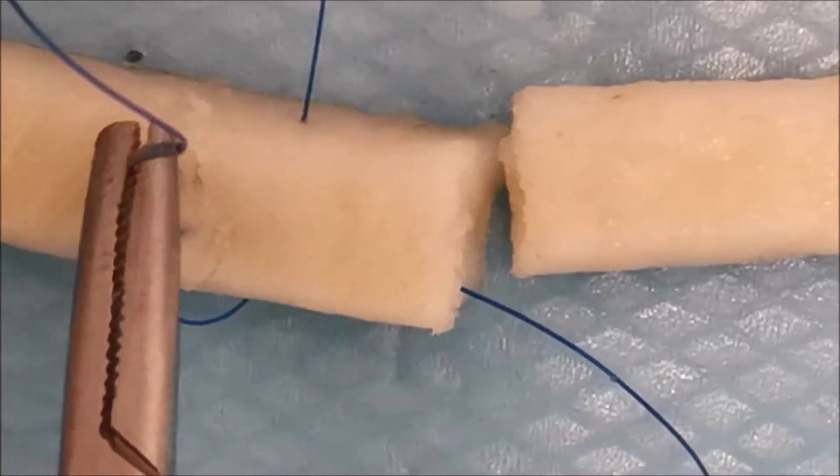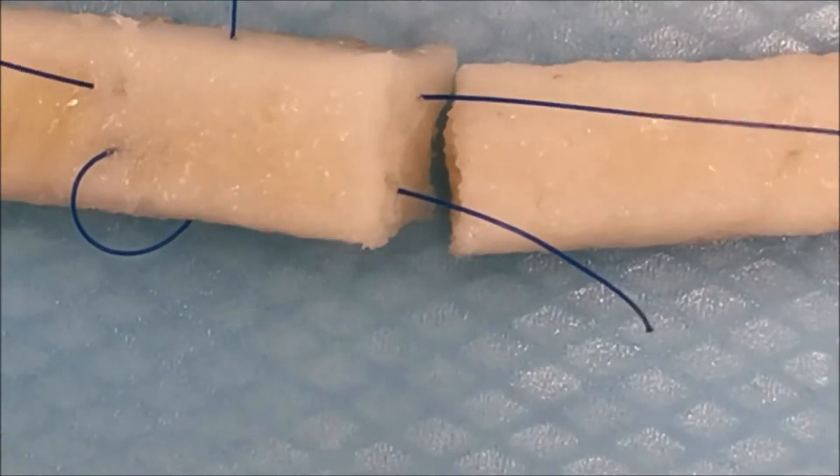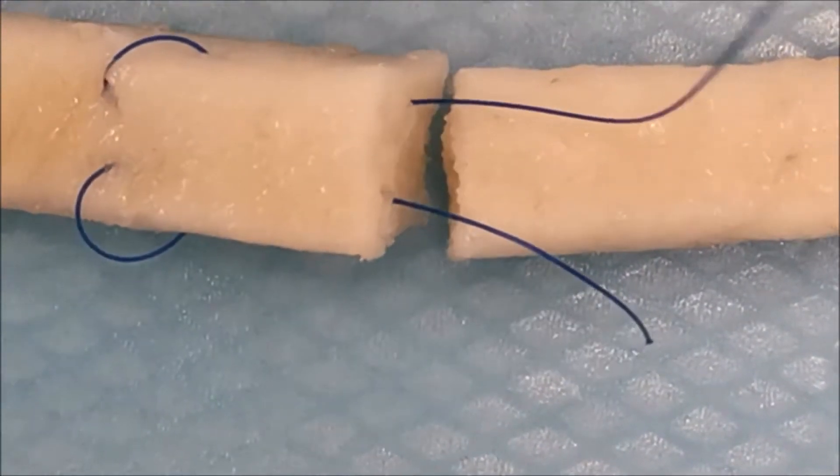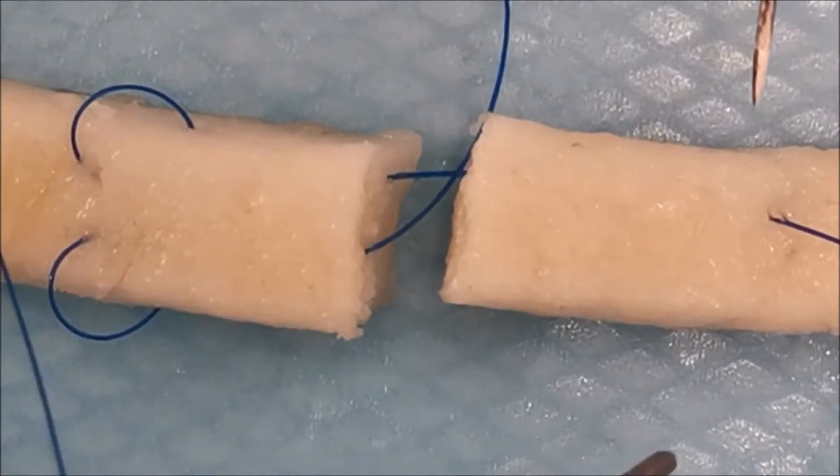The next grasping loop is done by the following longitudinal bite away from yourself, and the same is done on the other end of the tendon.